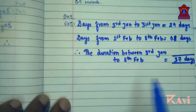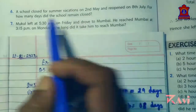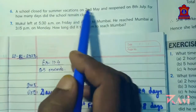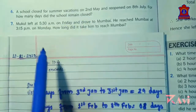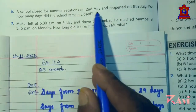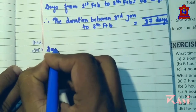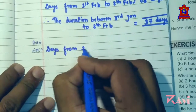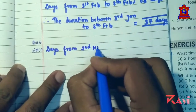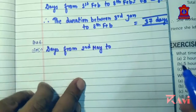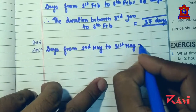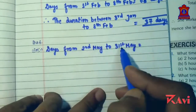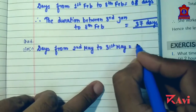Now let's read the next question — question number 6. A school closed for summer vacations on 2nd May and reopened on 8th July. For how many days did the school remain closed? Let's find out the number of days. The school was closed starting 2nd May.